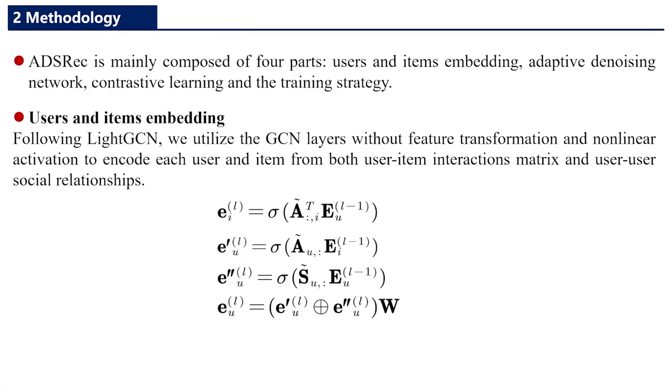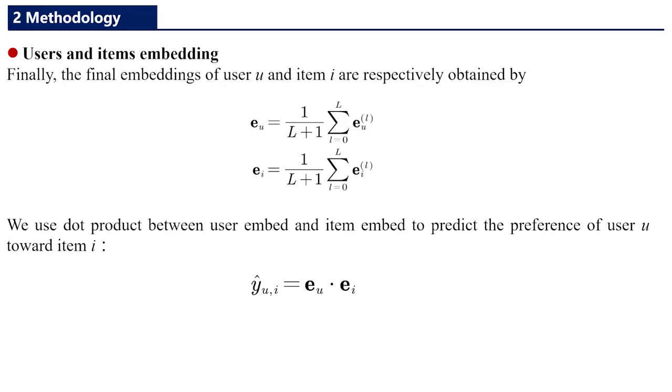For user and item embedding, following LightGCN, we utilize the GCN layer without feature transformation and nonlinear activation to encode each user and item from both the user-item interaction matrix and user social relationships. Finally, the final embeddings of user and item are respectively obtained by averaging the embeddings from each layer. We use dot product between user and item to predict the preference of user toward items.